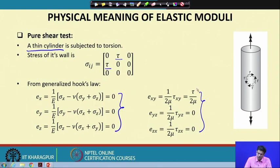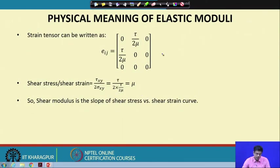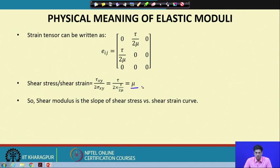Only the shear strain corresponding to x-y is nonzero, which is essentially τ_xy/(2μ), where μ is the shear modulus. The strain tensor also has nonzero components ε_xy and ε_yx. Taking the ratio of shear stress to shear strain gives shear modulus μ. Therefore, the shear modulus is the slope of the shear stress versus shear strain curve, and this is how shear modulus is determined in the laboratory.